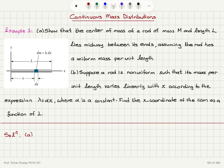Here is our uniform rod. We go to a distance x from the origin on the rod and find a differential mass element for a length dx. We have a differential mass lambda times dx. In the first case, when we have a uniform rod, the mass per unit length lambda equals M divided by L. So we have a linear mass density lambda which is M over L.